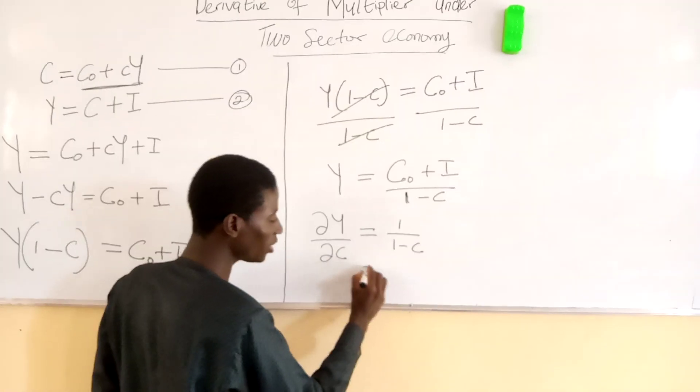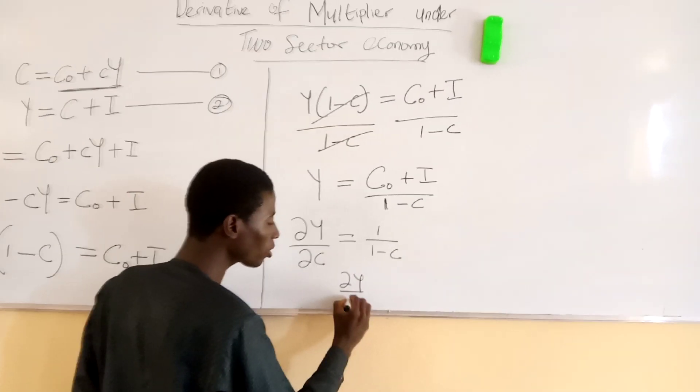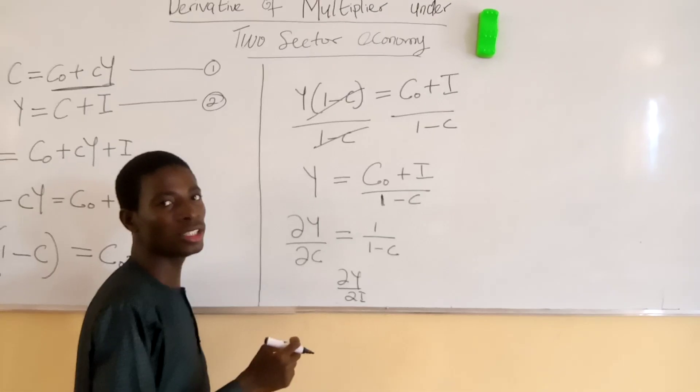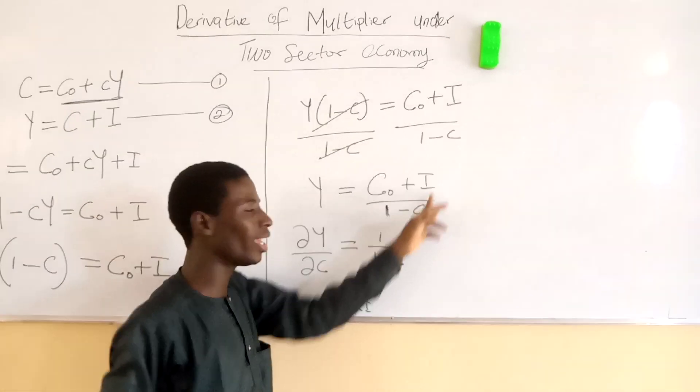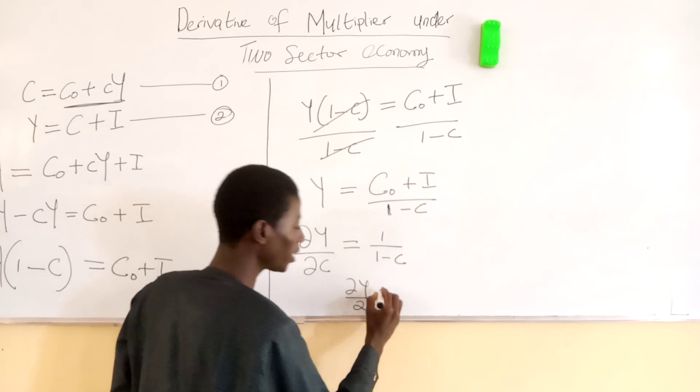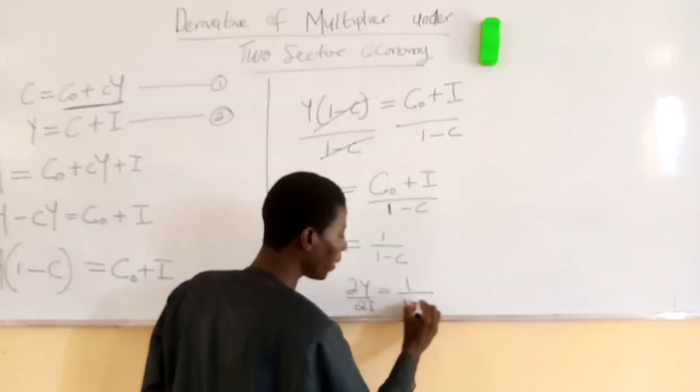Likewise, we can differentiate Y in respect of I. In normal differentiation, you differentiate I here. This will be treated as zero, here will be one, giving us one divided by one minus c.